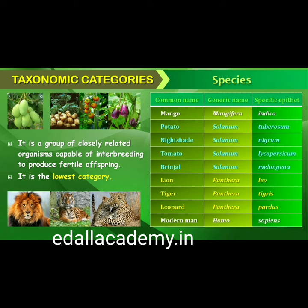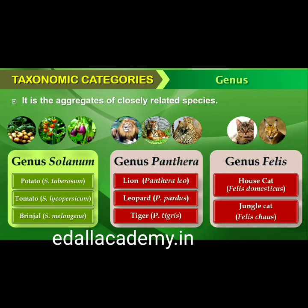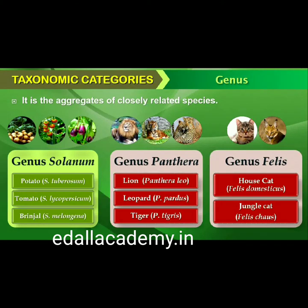Human beings belong to the species sapiens which is grouped in the genus Homo. The scientific name for human being is written as Homo sapiens. Genus comprises a group of related species which has more characters in common in comparison to species of other genera. We can say that genera are aggregates of closely related species. For example, potato and brinjal are two different species but both belong to the genus Solanum. Lion (Panthera leo), leopard (Panthera pardus), and tiger (Panthera tigris), with several common features, are all species of the genus Panthera.